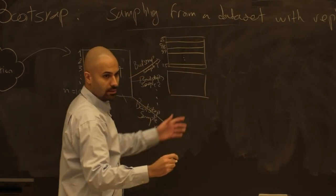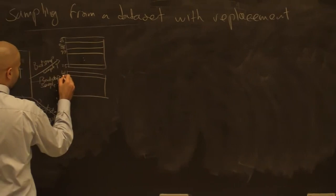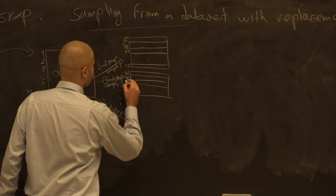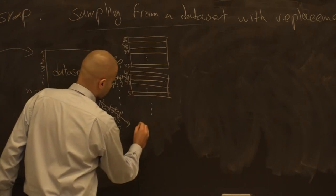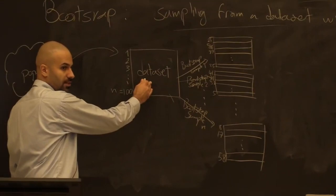Then in bootstrap sample two, we need more random numbers: 41, then 41 again — that's fine, it's bootstrap with replacement, so 41 can appear twice — then maybe 38, and 5. The last bootstrap sample might have 8, 17, 58. Whatever we can estimate from the original dataset, we can also estimate from each of these bootstrap samples.